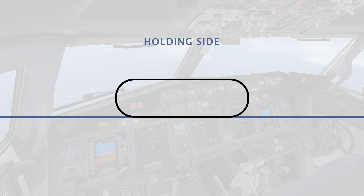The holding side — this is the side of the course that you will make your turn into. And the non-holding side — this is the side you're turning away from and not flying the aircraft into. You have your holding course — this is the direction of travel, the course you will fly into the holding pattern on the assigned arrival.